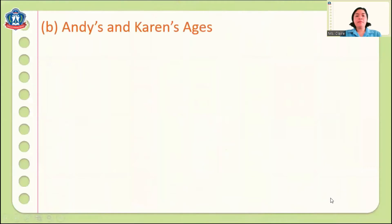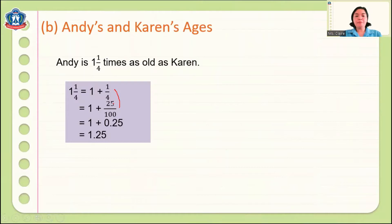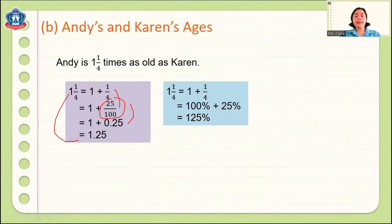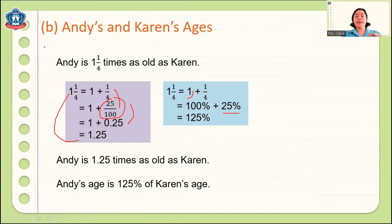Here is another problem: Karen's age. Nd is 1 and 1/4 times as old as her parent. One and 1/4 equals 1 plus 1/4. We change 1/4 to a fraction with denominator 100, which is 25/100, equal to 0.25. Therefore, 1 and 1/4 equals 1.25 as a decimal. We can also change this to a percentage: 1 is 100% and 1/4 is 25%, so the total is 125%. So Nd is 1.25 times as old as Karen, and her age is 125% of Karen's age.